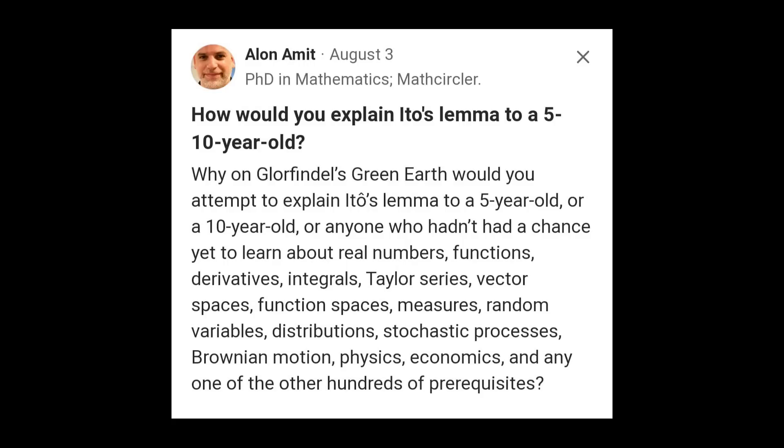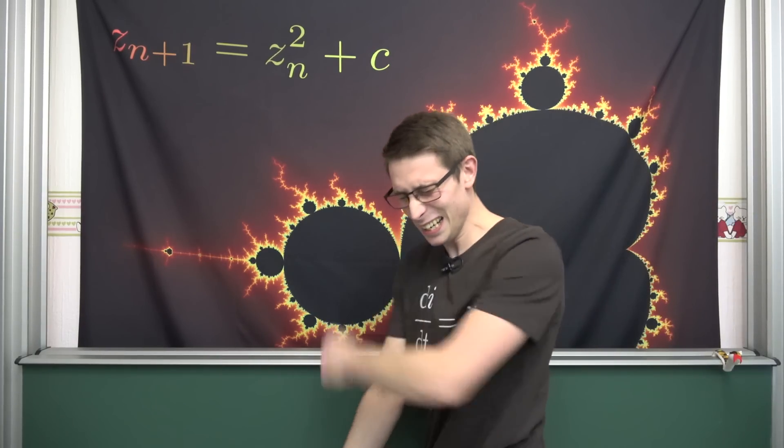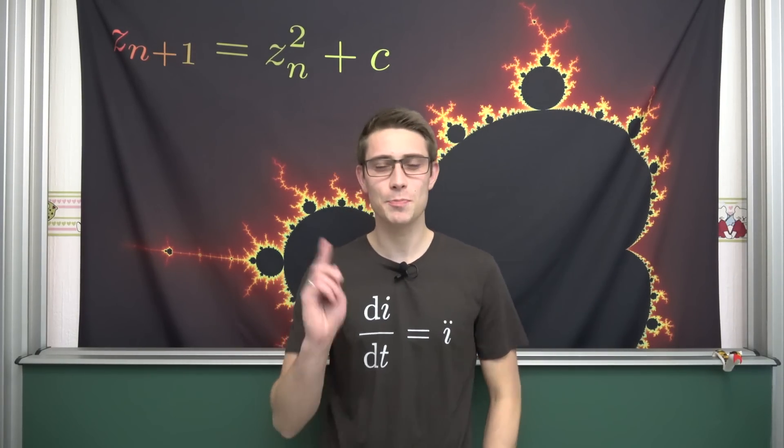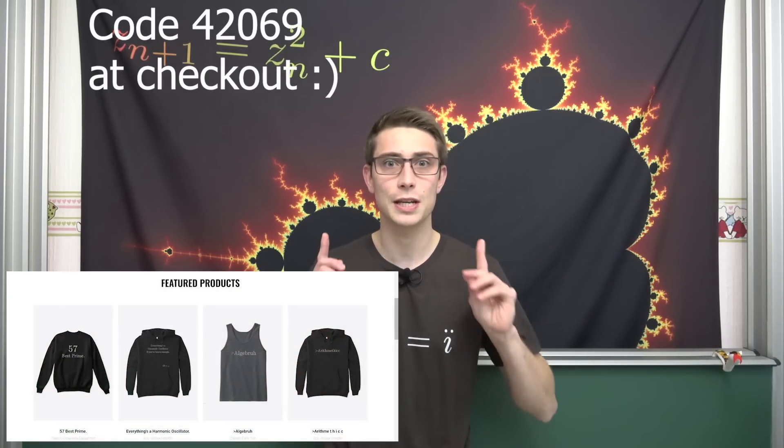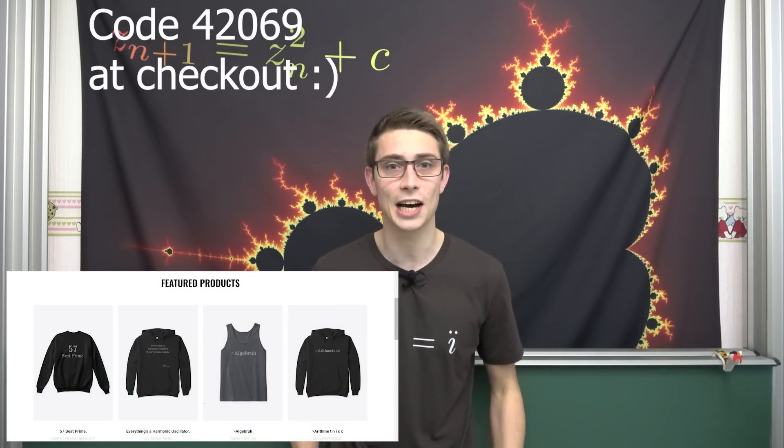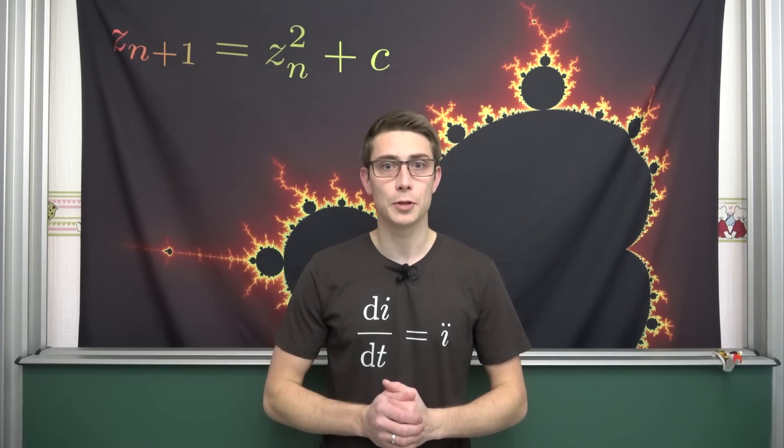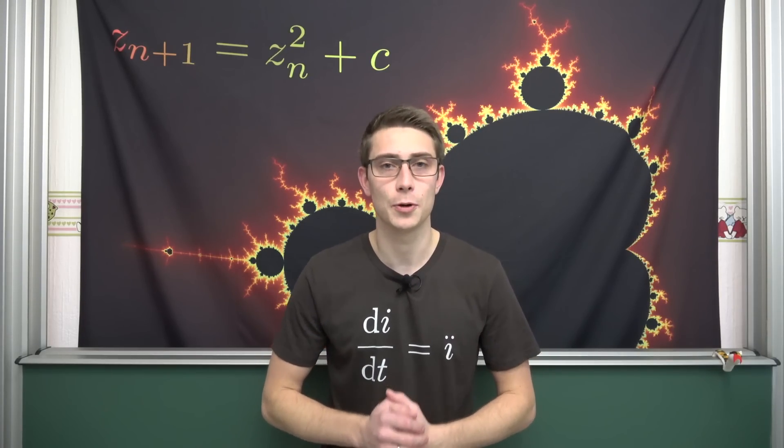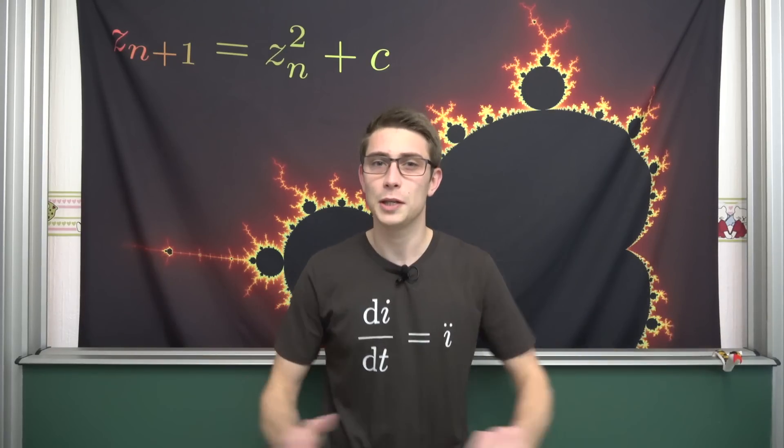PapaFlammy's Advent Calendar! Good morning fellow mathematicians! Welcome back to PapaFlammy's Advent Calendar and as always you can use the code 42069 to get 10-15% depending on the day over on my personal Teespring shop, all merchandise completely reduced.